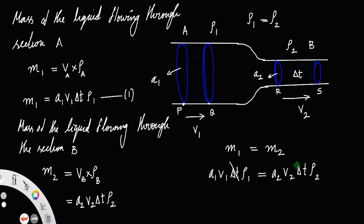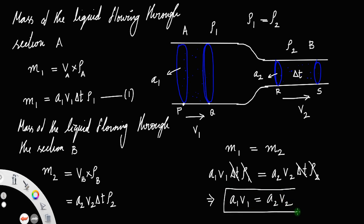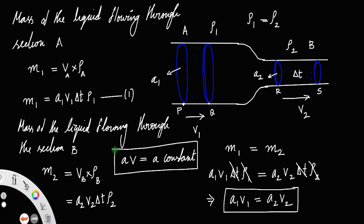We can cancel Δt and Δt, and since ρ₁ = ρ₂ we can cancel the densities as well. This implies a₁·v₁ = a₂·v₂. This relation is called the equation of continuity. We can also write this as: the area of the cross-section times the velocity of the fluid through that area always remains constant, and this is called the equation of continuity.